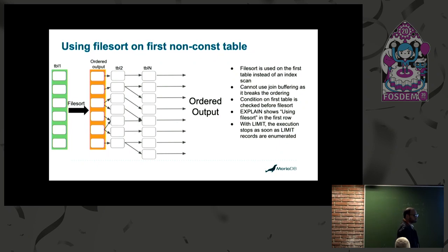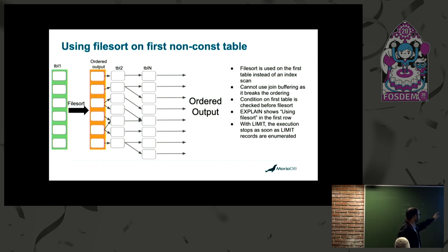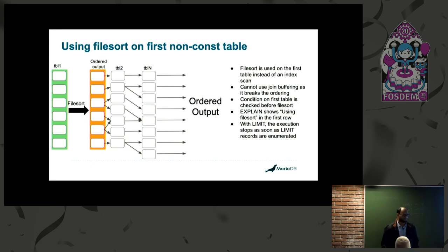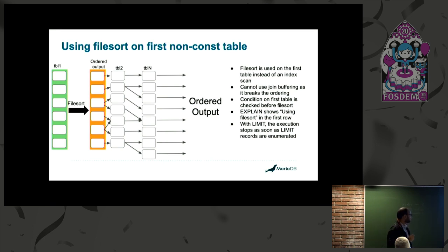The second case is applying filesort on the first non-constant table. You read from table T1, pass it to filesort, read the output of filesort, and then perform the remaining join. It is similar to the ordered index approach in that join buffering cannot be used. Any condition dependent on the first table is computed before sending the output to filesort. In EXPLAIN, you will see 'using filesort' in the first row, and you can again shortcut the execution with LIMIT because the rows are already ordered.